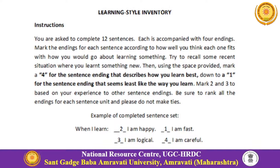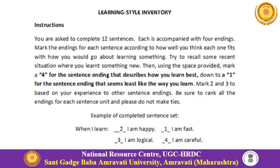Mark the sentence ending that describes how you learn best. This is not a ranking process — it is about giving points to the four options. Give the highest mark, that is four, to the sentence ending closest to you, which you practice most often. Give the point one to the ending that seems least like the way you learn. Then give two and three to the other two remaining endings. Be sure to rank all endings for each sentence and do not make ties.